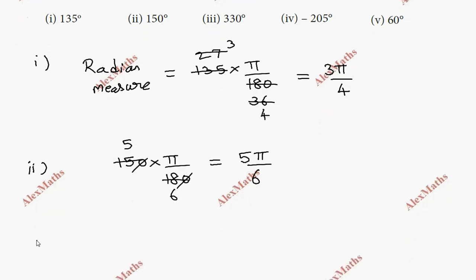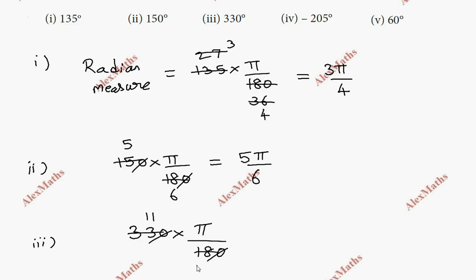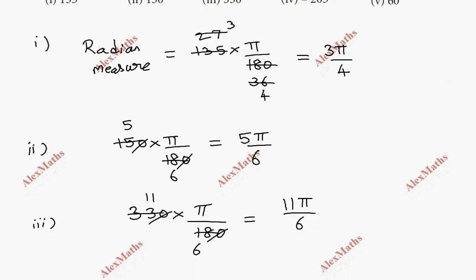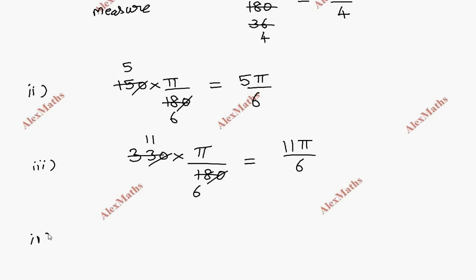For the third subdivision, 330 degrees. So 330 into π/180. We cancel: 330 and 180 simplify by dividing — cancel from 1110, then cancel from 6. The total answer is 11π/6. So 330 degrees equals 11π/6 radians.